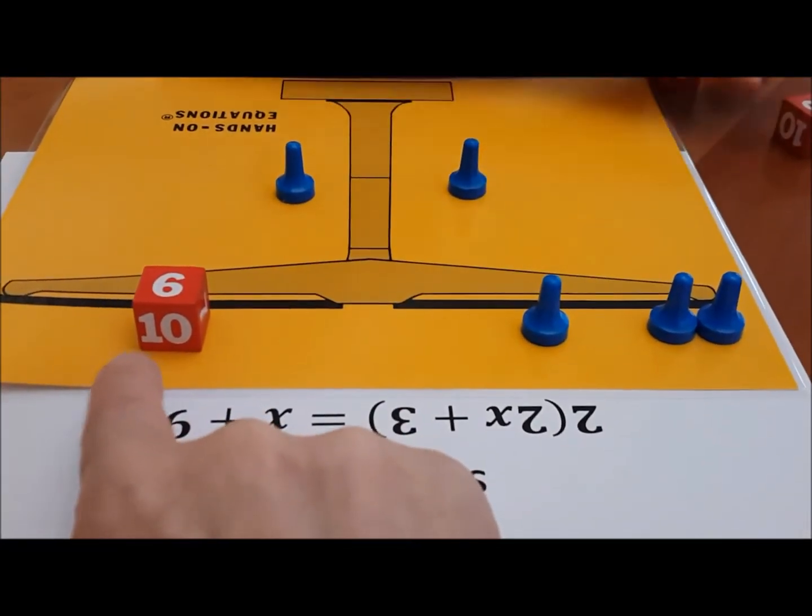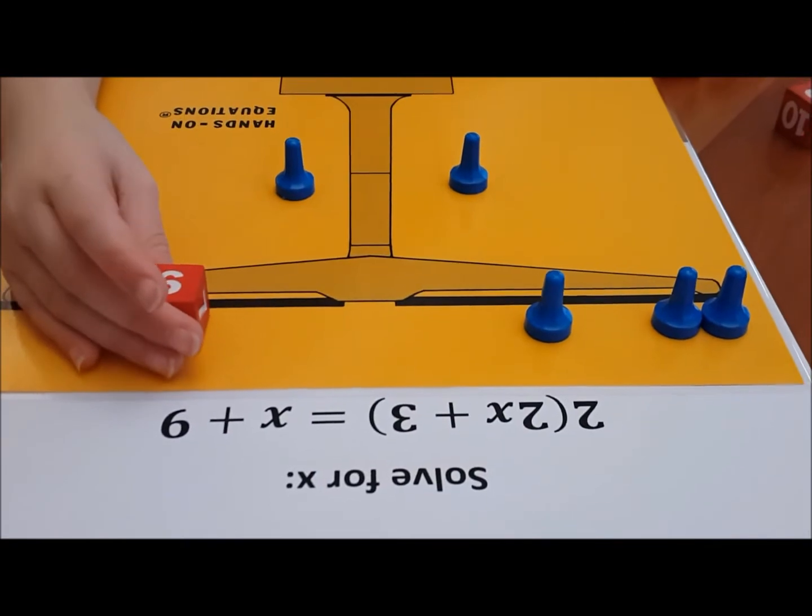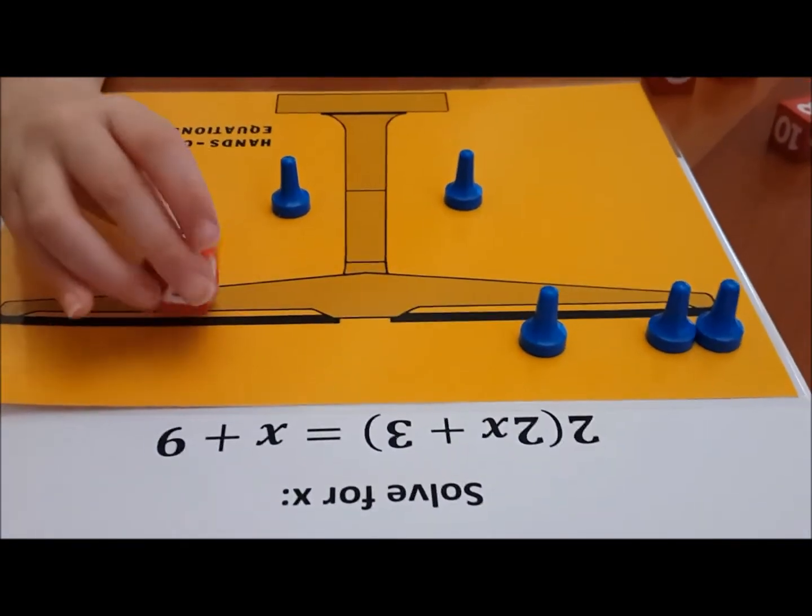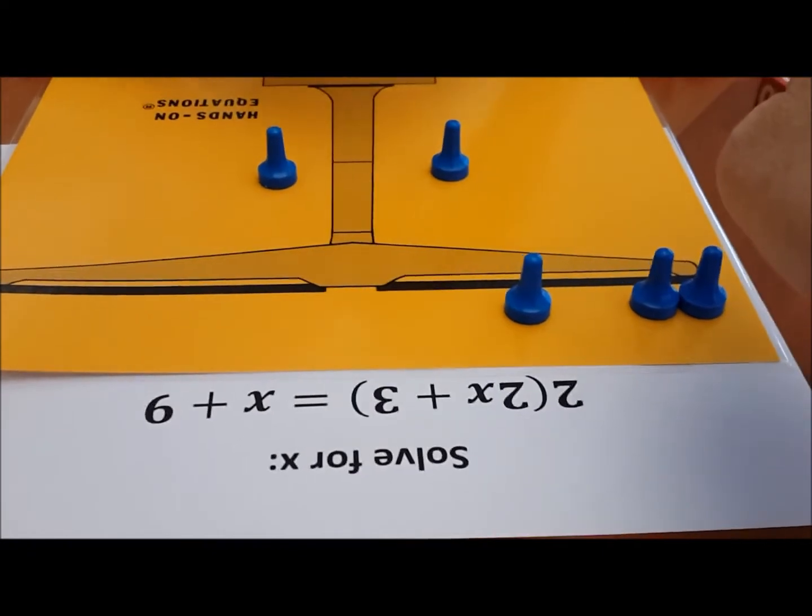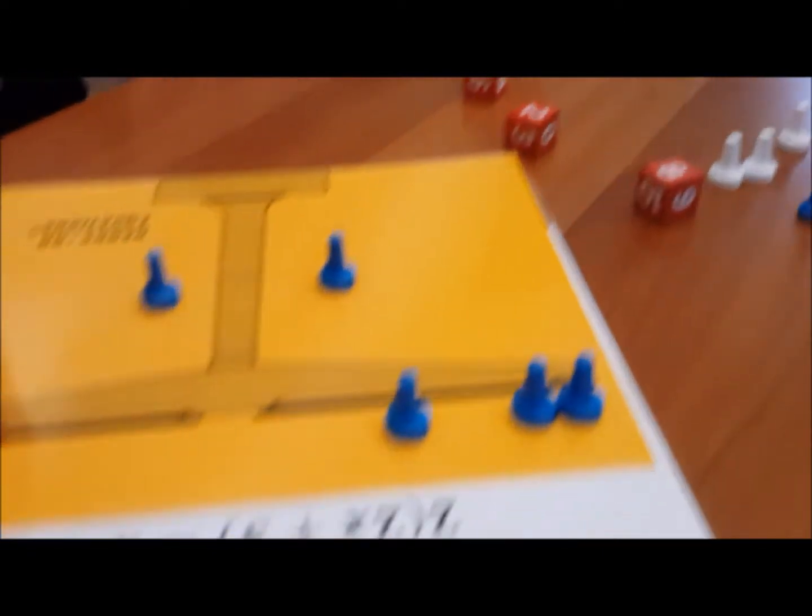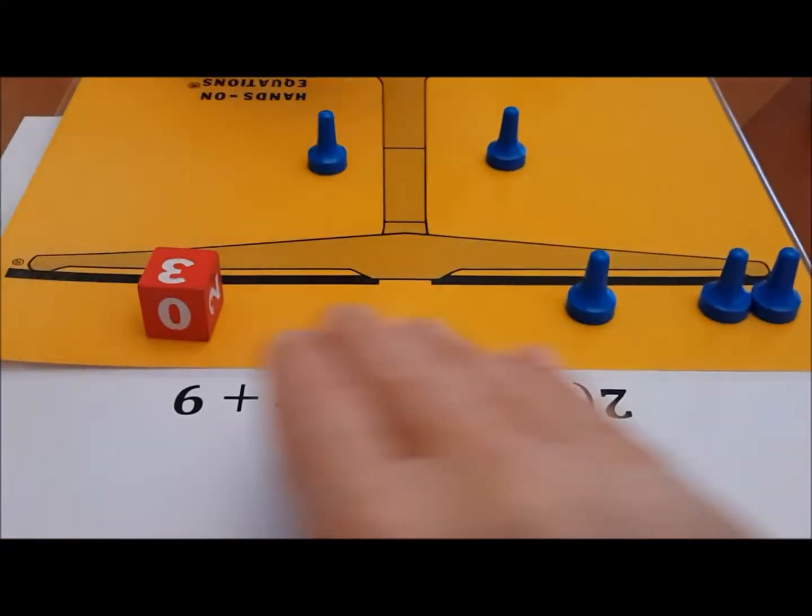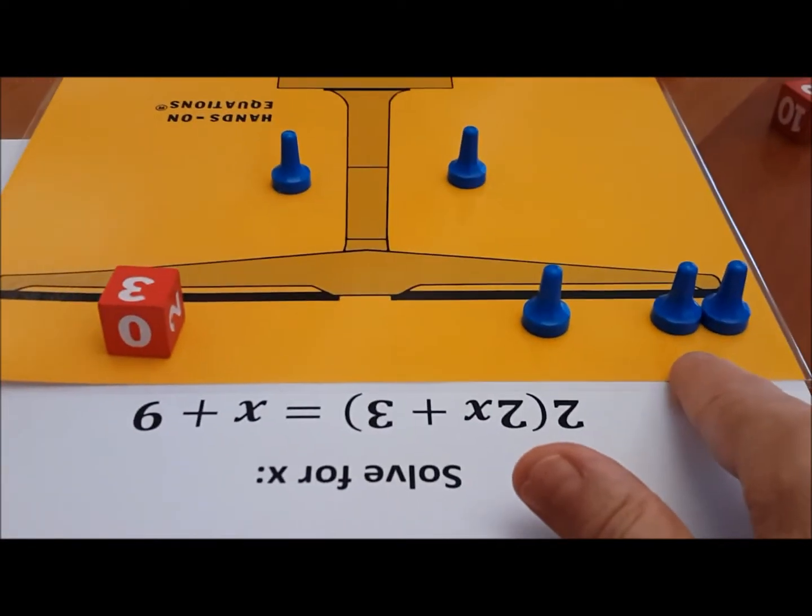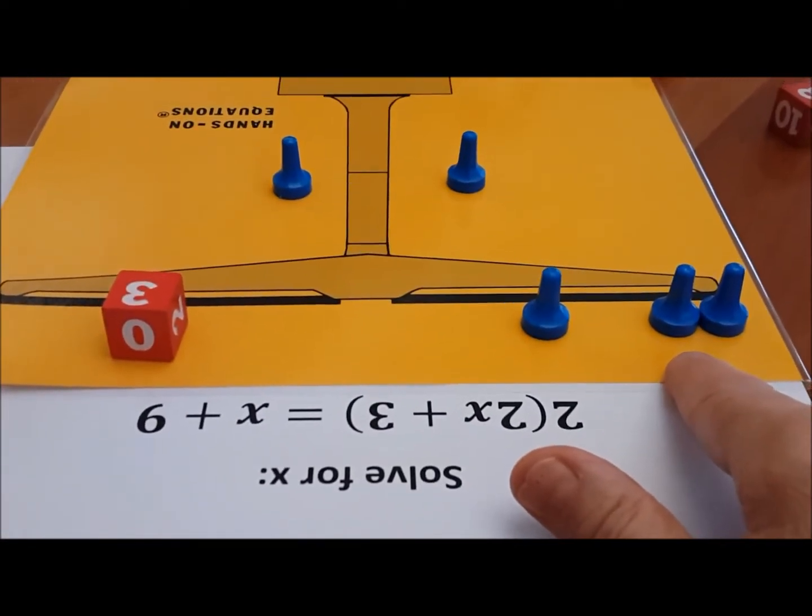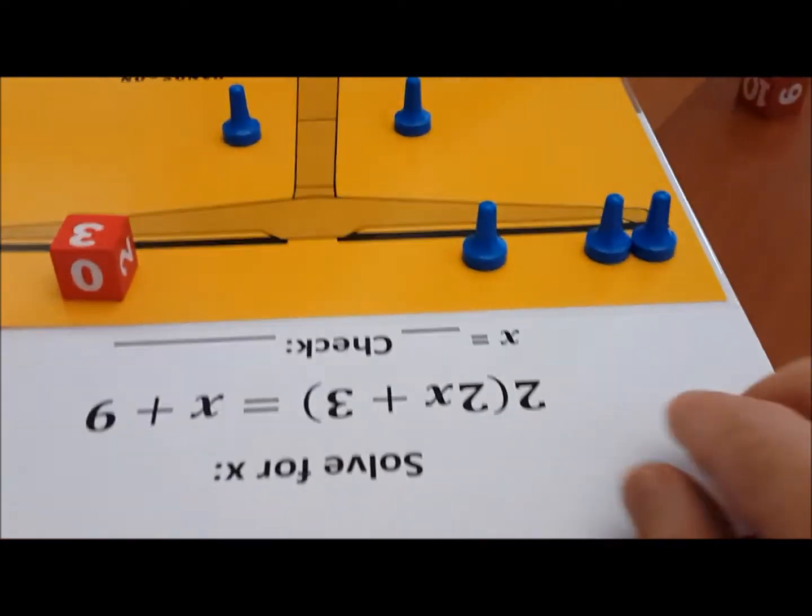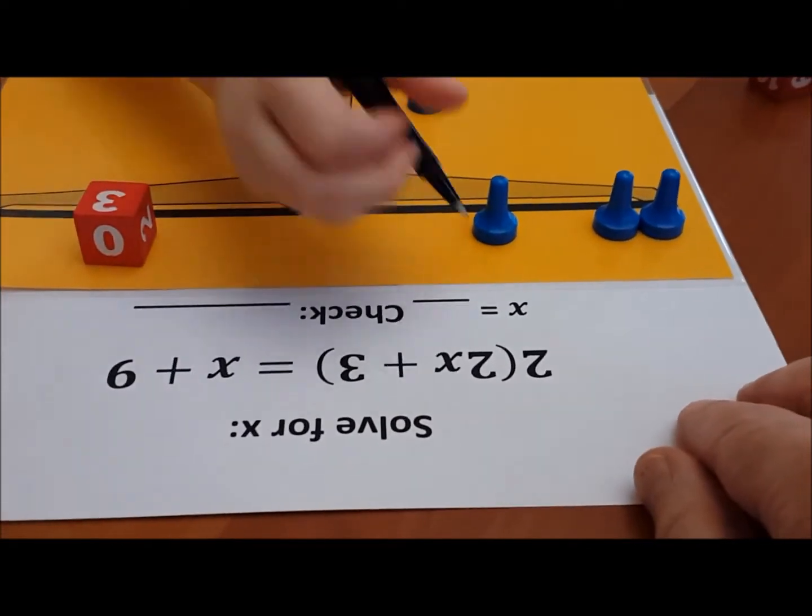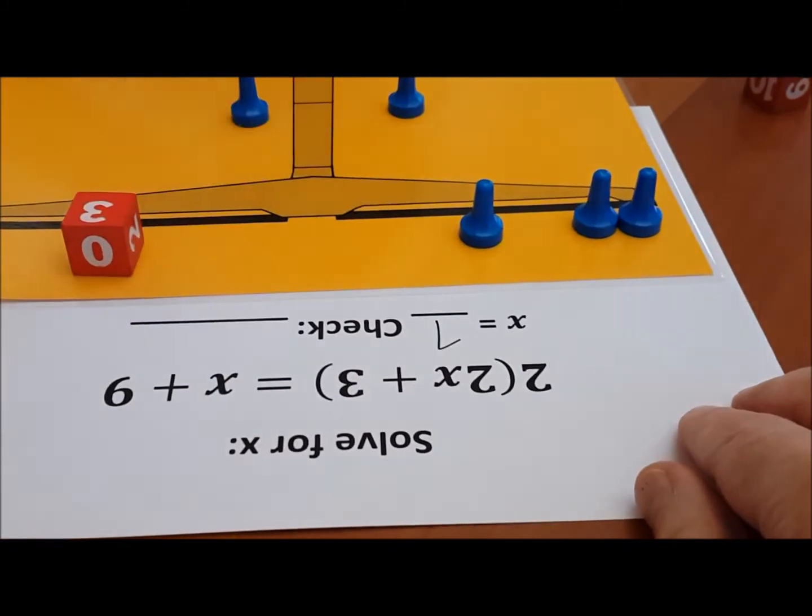And what's going to happen to this 9? It's going to become a 3. Okay, the cube for the 3 is on the other side. On the floor. So now you have 3 x's where it's 3. So how much is each x? 1. Over here, please write x equals 1. Wonderful.